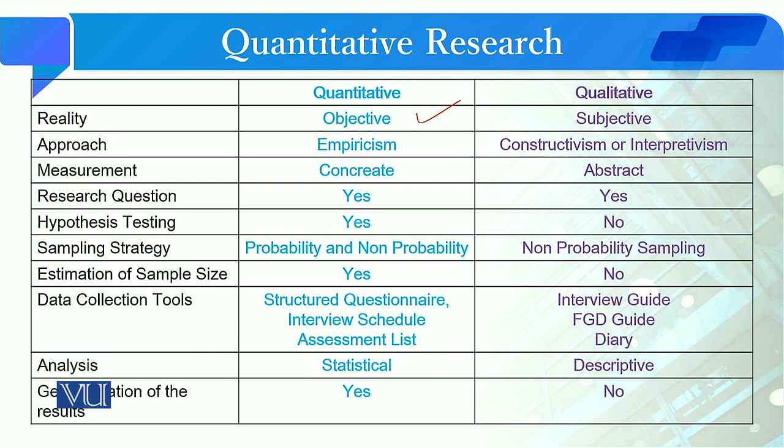We estimate a sample in quantitative research; on the other hand, we do not estimate a sample in qualitative research. If we talk about data collection tools, in quantitative research we use structured questionnaires, interview schedules, and assessment lists, while in qualitative research we use interview guides, FGD guides, and diaries.